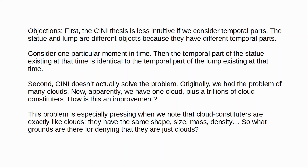Lewis frames this problem in terms of animals — he talks about Tibbles the cat. If we take the line that constitution is not identity, then we have the cat Tibbles plus an indefinite variety of cat constitutors which differ from each other in various atoms at the boundary of Tibbles. The cat constitutors are all cat-like in their shape, size, weight, motion, vocalisation, inner organs — indistinguishable from cats. Whatever Tibbles does, the cat constitutors will do as well. So who's to say that the cat constitutors are not just cats? What grounds are there for denying that they are just cats?